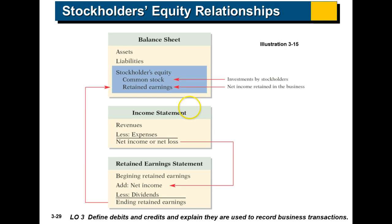Stockholders' equity relationships. Here's a great one where you look at your assets, your liabilities, and then you have something called stockholders' equity. Common stock is the money investors are putting into the company, whereas retained earnings is that net income that hasn't been taken out of the business yet. So that net income increases stockholders' equity.